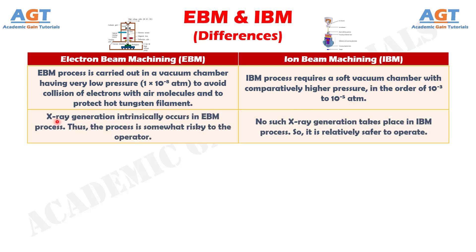Number 7. X-ray generation intrinsically occurs in Electron Beam Machining process. Thus, the process is somewhat risky to the operator, whereas no such X-ray generation takes place in Iron Beam Machining process, so it is relatively safer to operate.